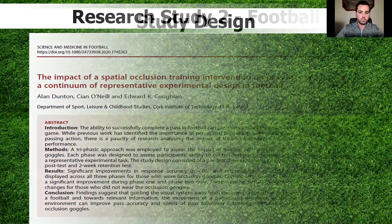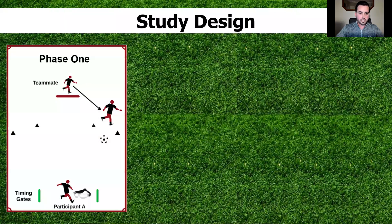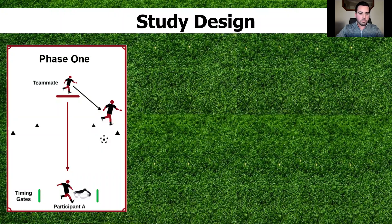Phase one was quite simple. A teammate passed the ball to the participant, who would be wearing the goggles during the intervention. As the ball was passed in, it broke a timing gate system. The participant had to control and pass the ball back to the teammate depending on their run — be that to the left or to the right. Once the ball was passed out, the timing gate system was broken again, giving us a response time variable.